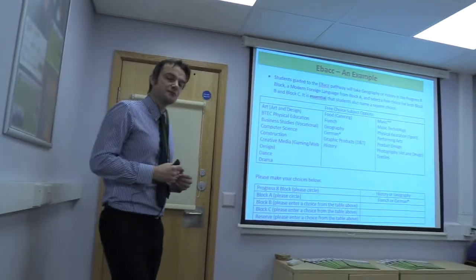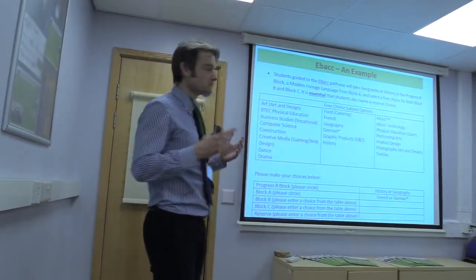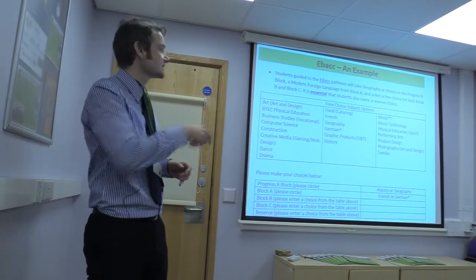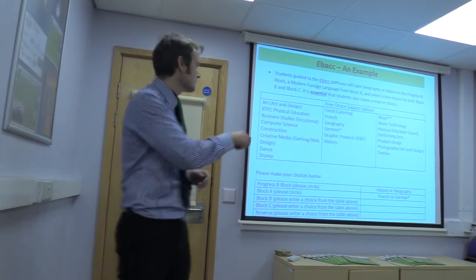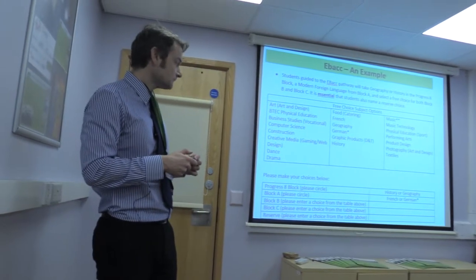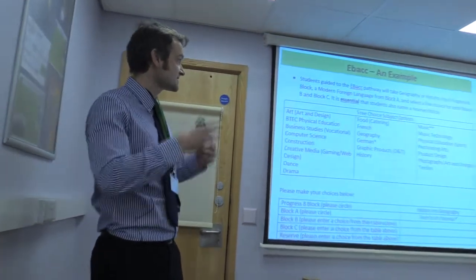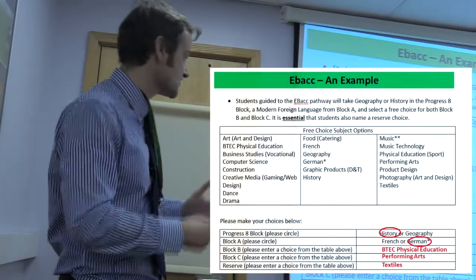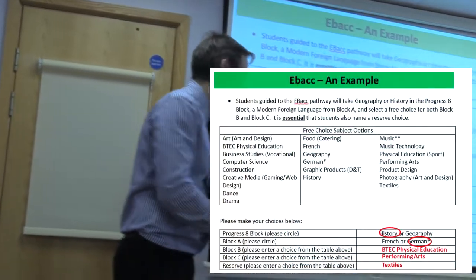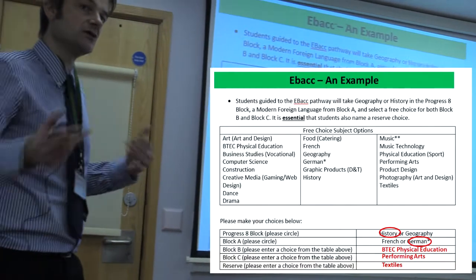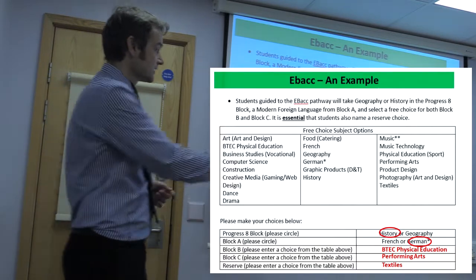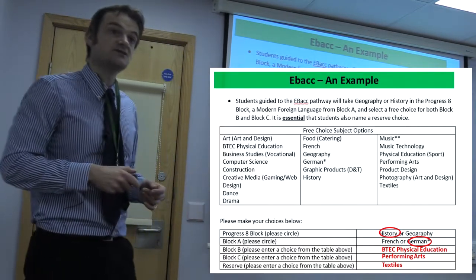Your son or daughter will get an options form in the not too distant future. They will have to select from the option choices a number of subjects. So, this is an EBAC student — as you can see, this is pre-populated. The student would decide whether they're going to do History or Geography. For the sake of argument, this particular student is going to study History and they've circled it.